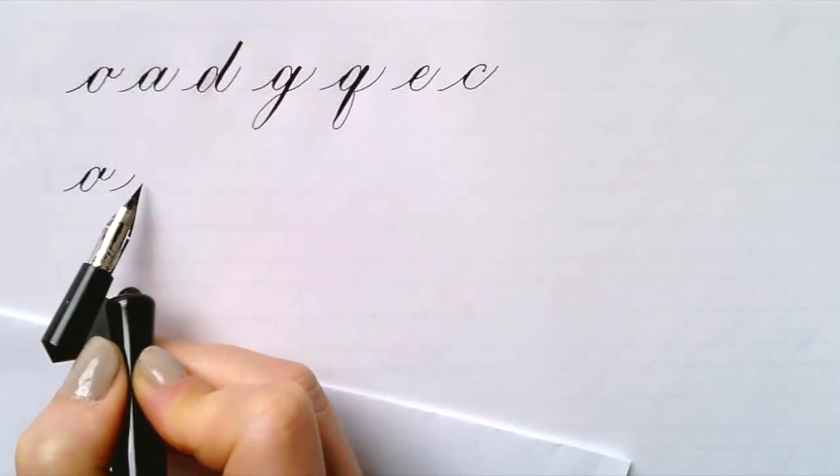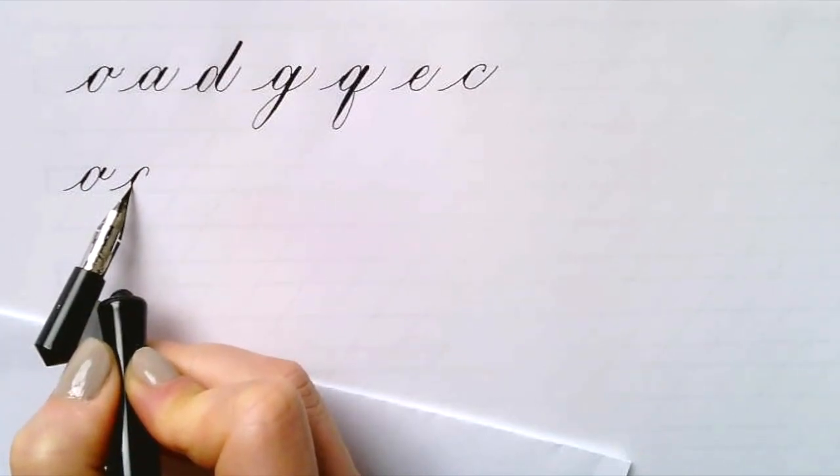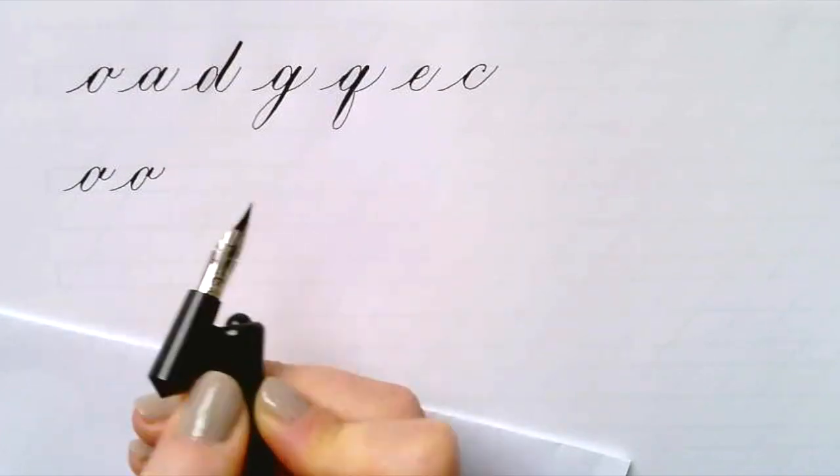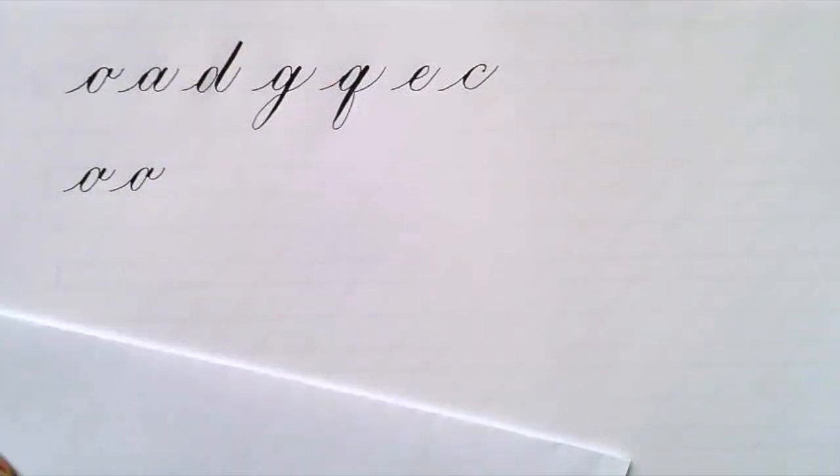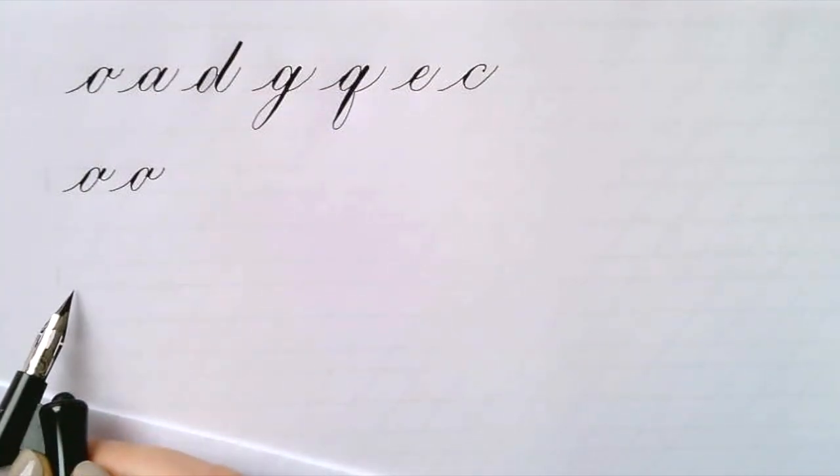Now with the in-stroke for oval shapes, we don't want the in-stroke to go all the way to the waistline. You want to shorten that just a little bit. This O looks a little anemic, but we're going to continue.